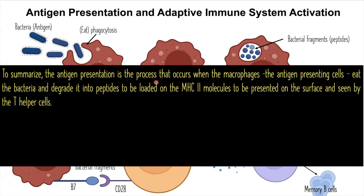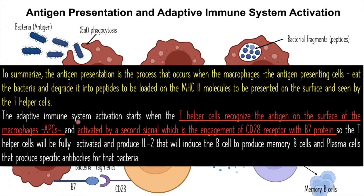To summarize: antigen presentation is the process where macrophages eat the bacteria, degrade it into peptides, load them on major histocompatibility class II molecules, and present them on the surface to be seen by T-helper cells. Adaptive immune system activation begins when T-helper cells recognize the antigen and are fully activated by a second signal — the engagement of the CD28 receptor with the B7 protein — causing them to produce interleukin-2, which induces B-cells to produce memory B-cells and plasma cells that generate specific antibodies against the bacteria.